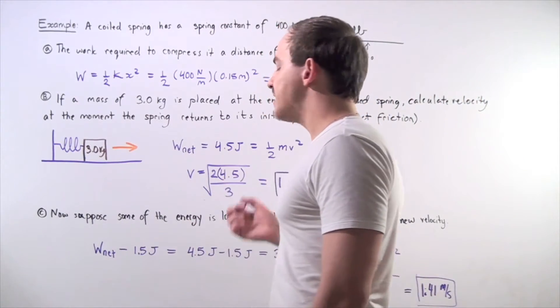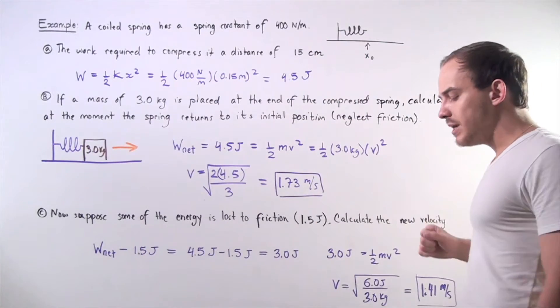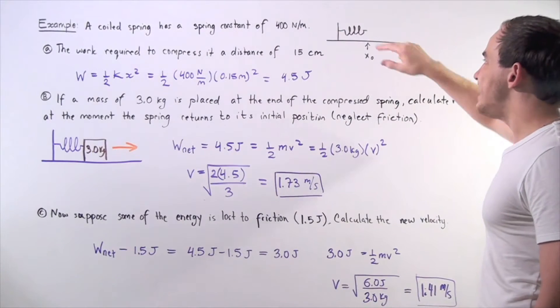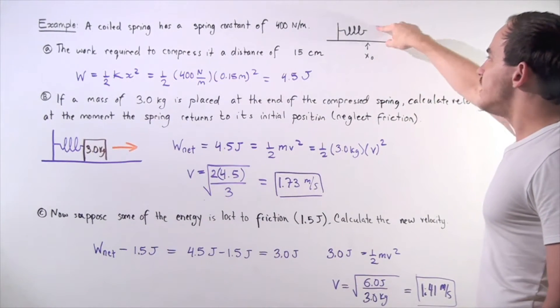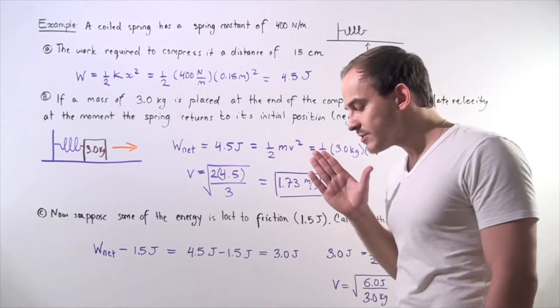Let's suppose we have a spring that has a spring constant of 400 newtons per meter. Let's suppose our spring is in the following initial position at x naught, and in this position our spring is not compressed and it's not stretched.